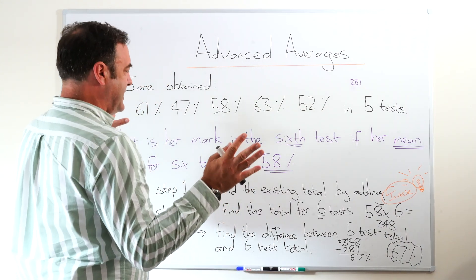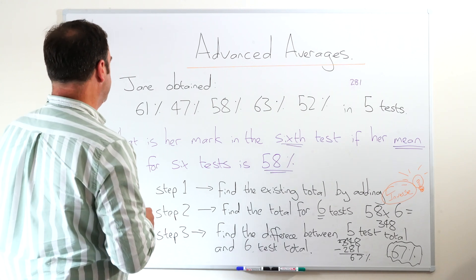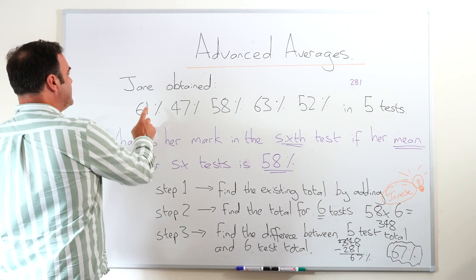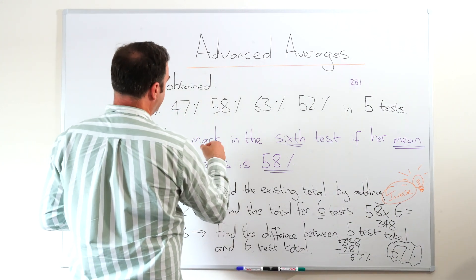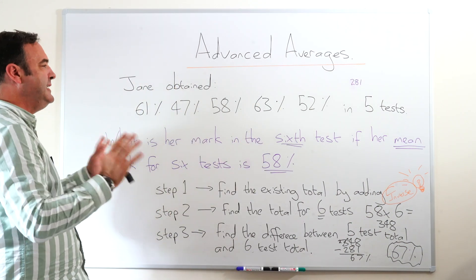This is a classic extension type question for averages. It says here Jane obtained 61%, 47%, 58%, 63%, 52% in five tests.